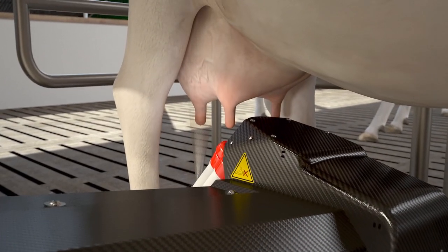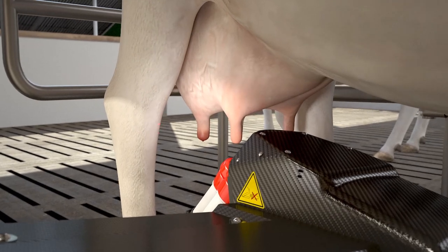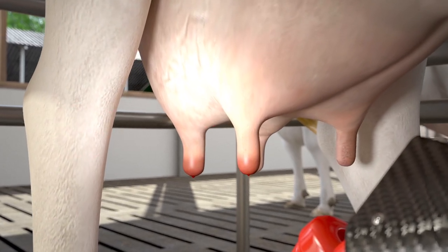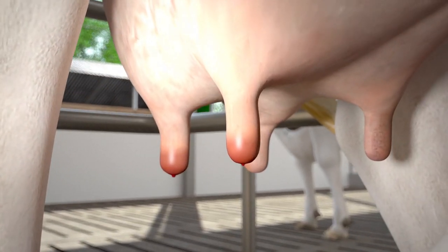After taking off the teat cups, the teats are sprayed with an udder care product. To do this as efficiently as possible, the udder is scanned again because it changes shape after milking.